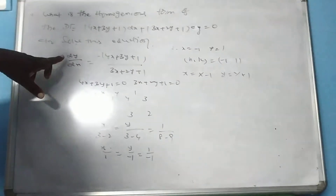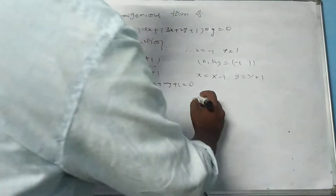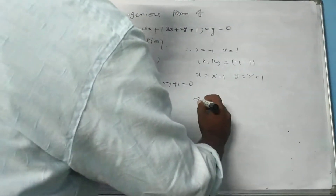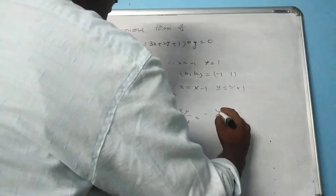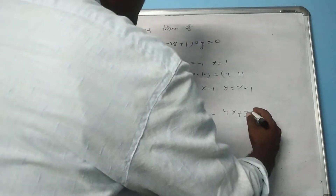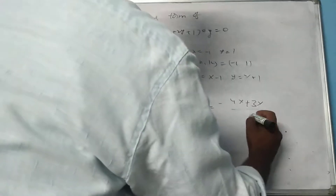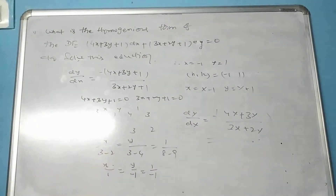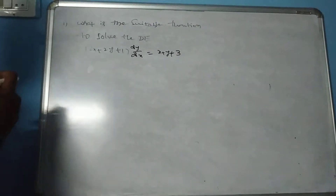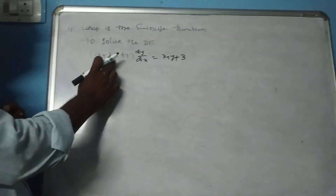Substituting these into the equation, therefore d(capital Y) by dx equals minus (4 capital X plus 3 capital Y) divided by (3 capital X plus 2 capital Y). This is the homogeneous form of the differential equation.